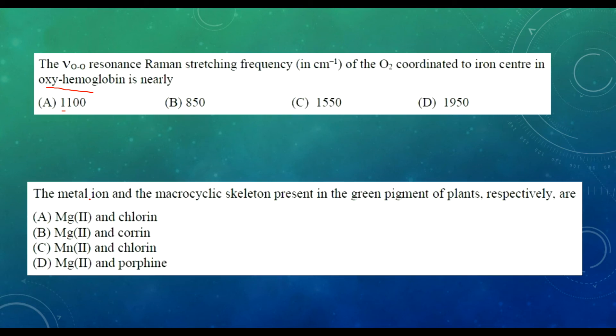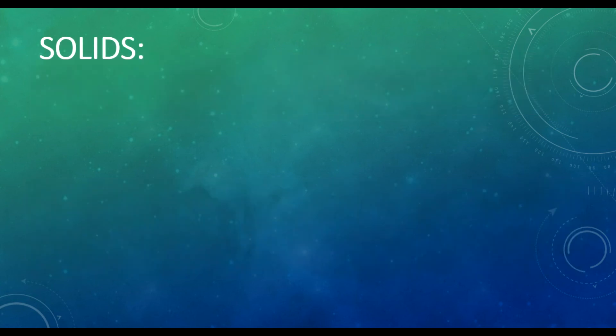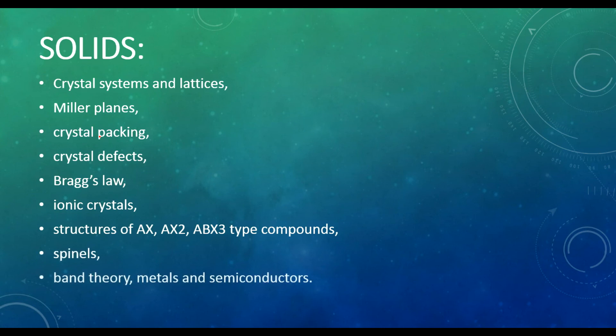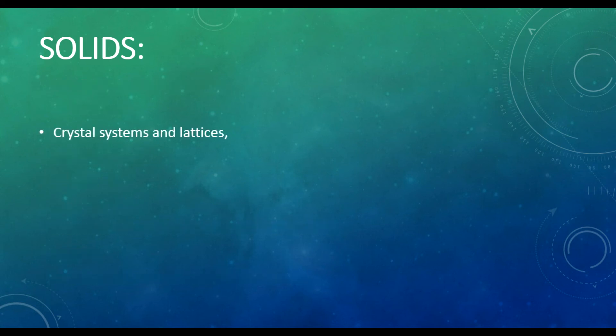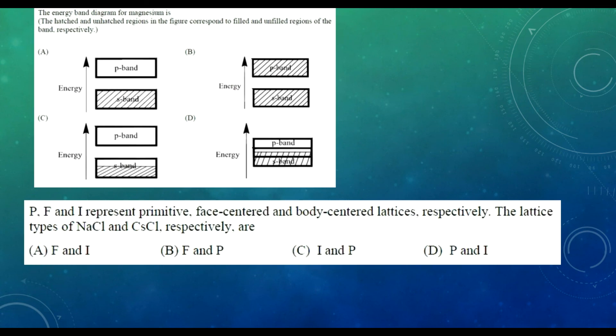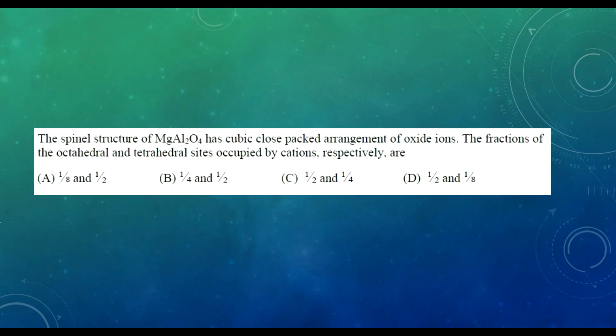In the solid state, the main topics are crystal systems, Bravais lattices, Frenkel and Schottky defects, though defects are not frequently asked. Blackbody radiation is very important. Perovskites have been asked many times. Band theory is important: metals, semiconductors, p-type and n-type bands, how they form. These are questions asked in previous GATE 2017, including one on spinel.